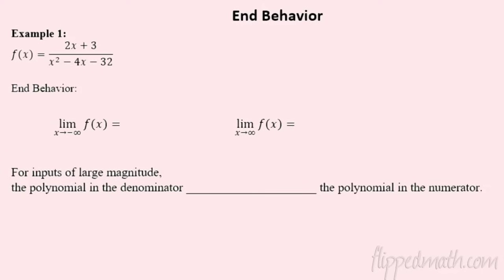Alright, let's take a look at 1.7 part b — this section is so good we made it two parts. We're looking at end behavior of rational functions. Last time we were looking at tables and graphs, trying to figure out what's happening as we get infinitely smaller going left or infinitely larger going right. We're going to do the same kind of stuff but algebraically today.